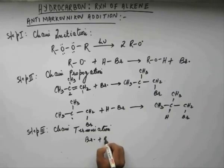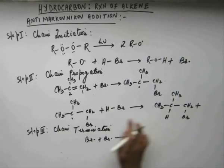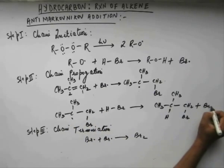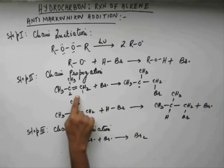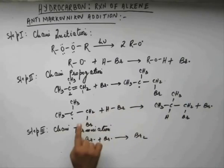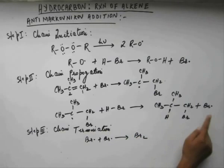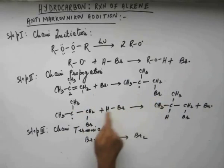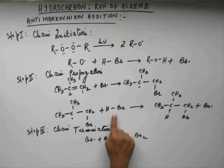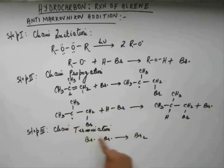If those two free radicals react among themselves, that would terminate the chain. In this reaction, when hydrogen is grabbed, a BR dot is generated, and this BR dot will again react with unreacted alkene to form a free radical. This free radical will again react with unreacted HBr, giving us the product and also regenerating the reacting species BR dot. This BR dot will again react, forming the free radical, which reacts with remaining HBr to form the product along with the reacting species.